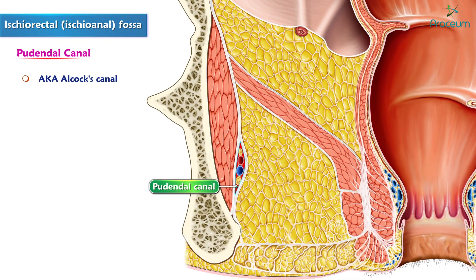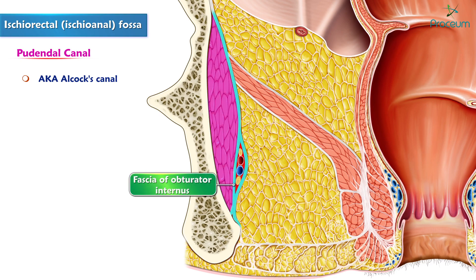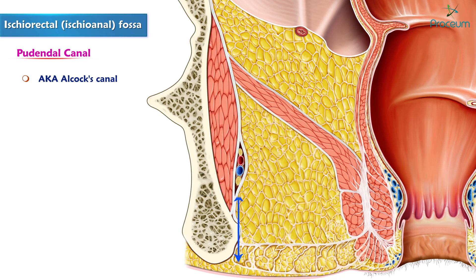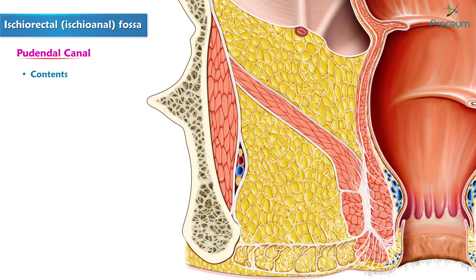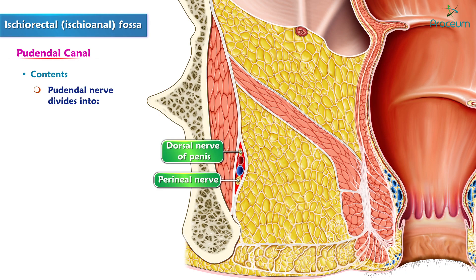The Alcock canal, also known as the pudendal canal, is a sheath derived from the fascia of the obturator internus muscle and is found in the lower lateral wall of the ischiorectal fossa. It is located 1 inch or 2.5 centimeters above the ischial tuberosity, and extends from the lesser sciatic foramen to the posterior limit of the deep perineal pouch. Its contents include the pudendal nerve, which divides within the canal into the dorsal nerve of the penis and the perineal nerve, as well as the internal pudendal artery and vein.